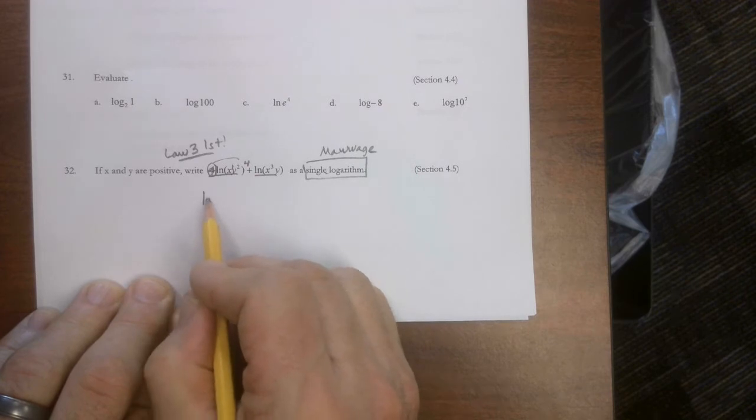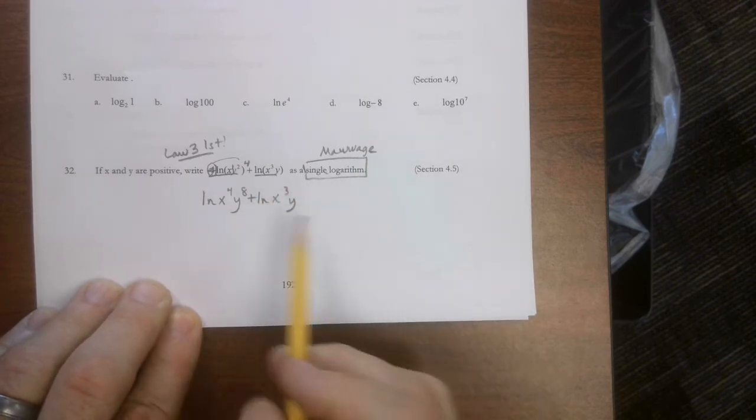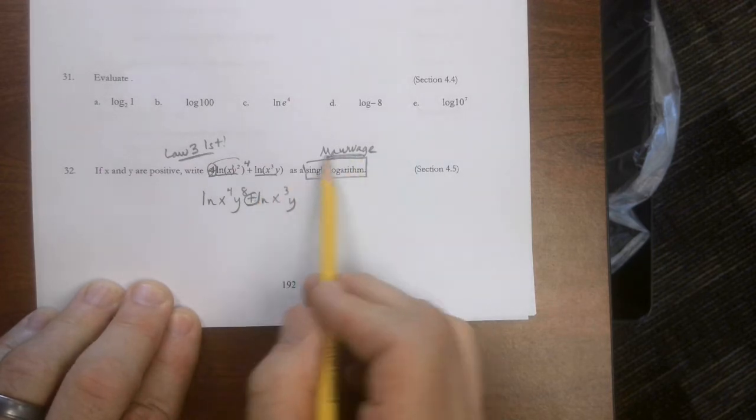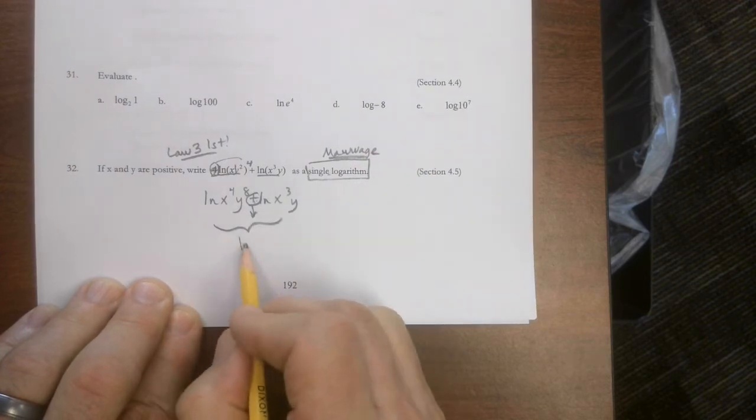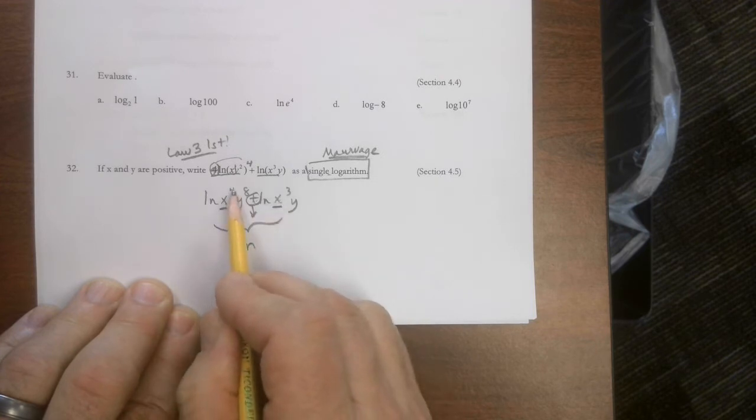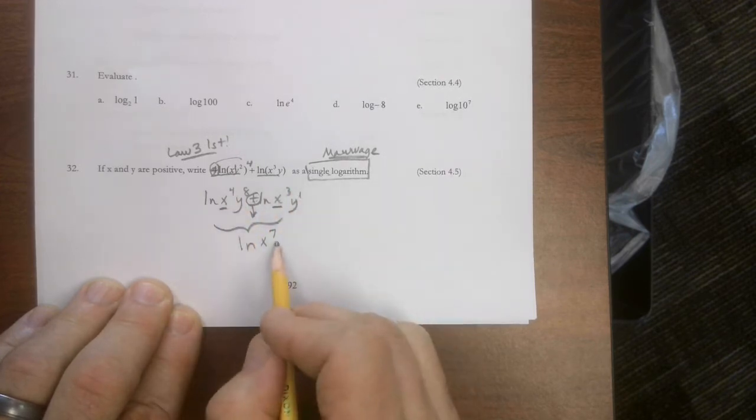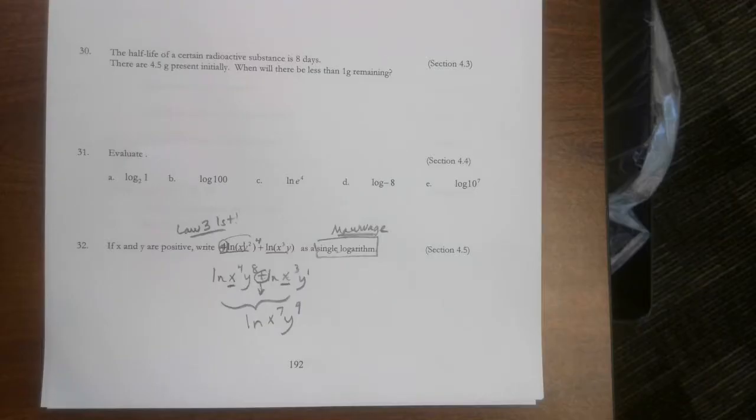And now I have a power to a power situation. So I have the natural log of x to the fourth y to the eighth plus natural log of x cubed y. What does addition mean? That's my mawage rule. That means multiply. So that turns into one log if we multiply this stuff together. So when the bases are the same, you're multiplying, you add the exponents. Same thing here. There's an invisible one there. So that'd be y to the ninth.